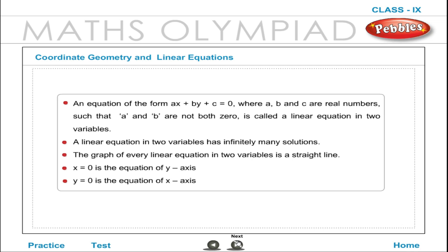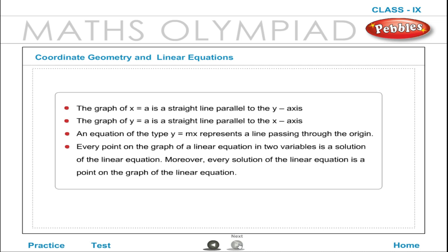The graph of every linear equation in two variables is a straight line. x = 0 is the equation of the y-axis, and y = 0 is the equation of the x-axis. The graph of x = a is a straight line parallel to the y-axis, and the graph of y = a is a straight line parallel to the x-axis. An equation of the type y = mx represents a line passing through the origin. Every point on the graph of a linear equation in two variables is a solution of the linear equation, and every solution of the linear equation is a point on the graph.